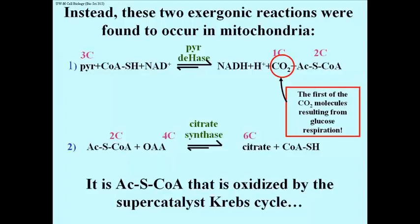It is in fact acetyl S-coenzyme A then that is oxidized by the super catalyst Krebs cycle, and the enzyme that does it is citrate synthase. So no mystery anymore. There is an enzyme that links the oxidation of an organic acid to the Krebs cycle, but the organic acid that's actually being oxidized is not pyruvate, but acetyl Coenzyme A or acetate.